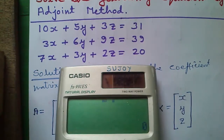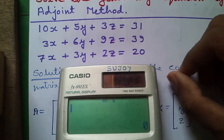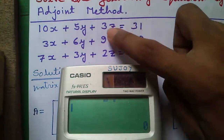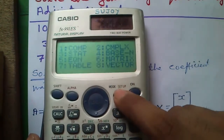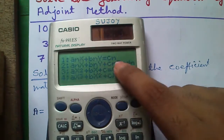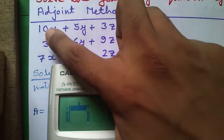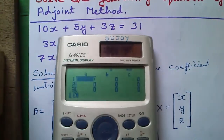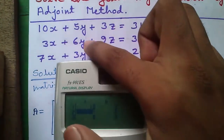Now instead of doing these long calculations, if you have a Casio FX-991ES calculator you can directly solve the system of equations. First press the MODE button, then press 5 for equation mode, then press 2 for system of 3 linear equations. Then just enter the coefficients: 10, 5, 3, 31 for the first equation.